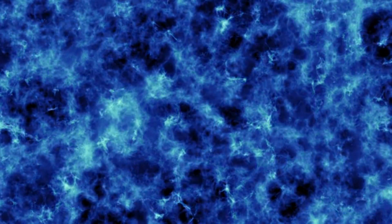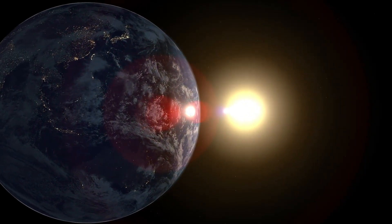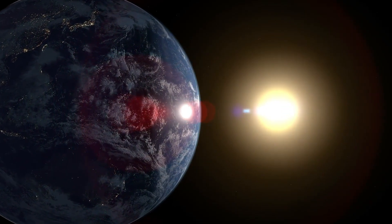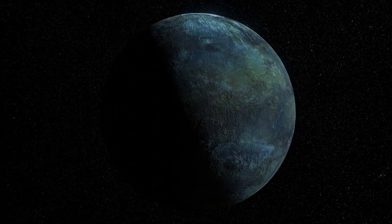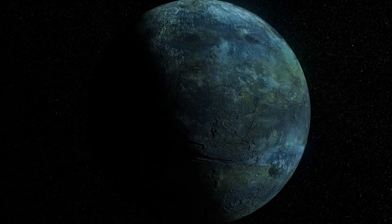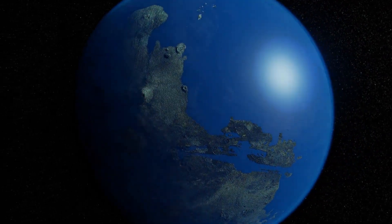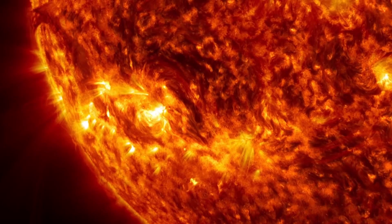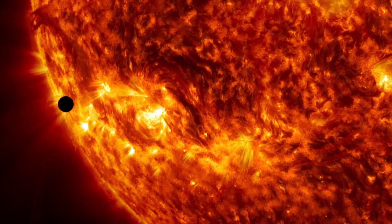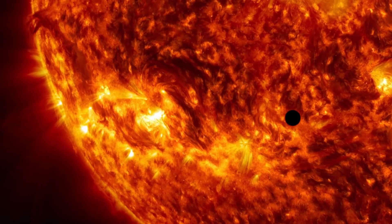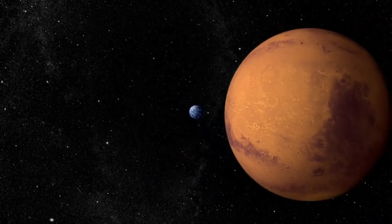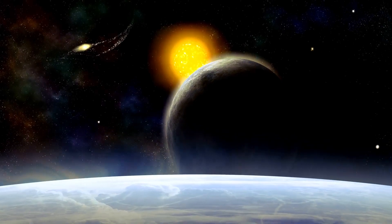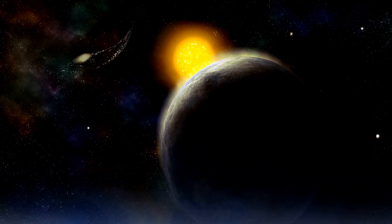The Voyager missions have profoundly impacted our understanding of the solar system and beyond. One of the most significant aspects of these missions was the detailed analysis of the outer planet's atmospheres and magnetic fields. Voyager 1's data revealed intricate details about Jupiter's magnetic field, showing it to be far more complex than previously imagined. The spacecraft's instruments detected intense radiation belts surrounding Jupiter, which were found to be far stronger than those around Earth. This discovery has crucial implications for understanding the dynamics of planetary magnetospheres.